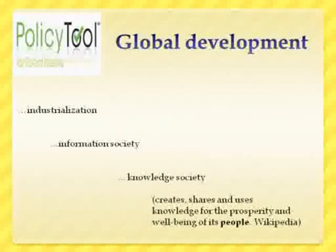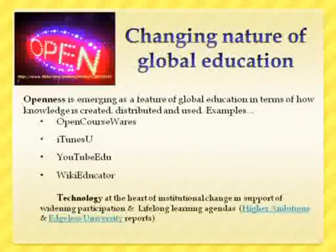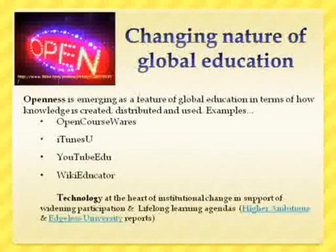Looking at global development, going back to when copyright started, we have seen a shift from the industrialized age to the information society, and now we talk about a knowledge society in which knowledge is created, shared, and used in very specific ways. The emphasis here is that it's for the well-being of people — more focused on society rather than the economic benefits that accrue to an individual. We see the effects of these changes in the global educational front, where openness has become a defining feature in how knowledge is created, distributed, and used.